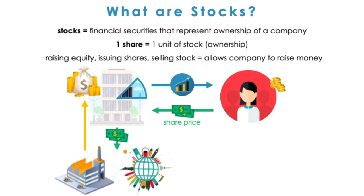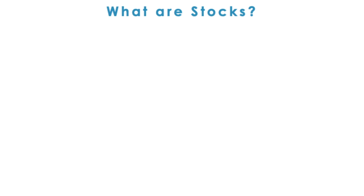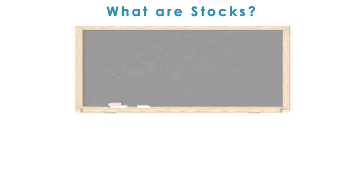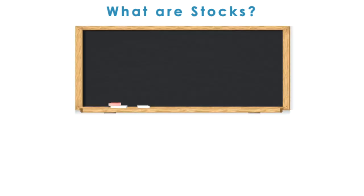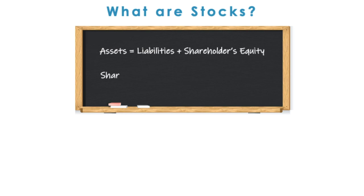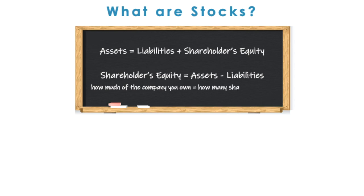Investors earn a return from these profits in the form of capital gains and dividends as compensation for enduring the risk of the company, which I will expand on later. In Accounting 101, one of the first concepts we learn is that assets are equal to liabilities plus shareholders' equity. Thus, how much of the assets less the liabilities in a company you own is proportionate to how many of its shares you have purchased and now hold.